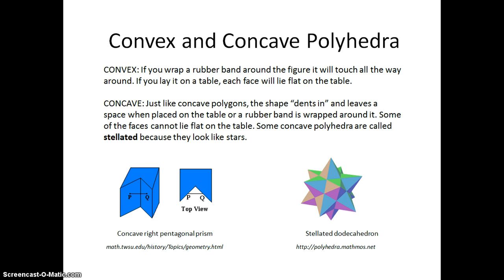Sometimes we have concave polyhedra that look like stars, and these are called stellated. Here is an example of a stellated dodecahedron.